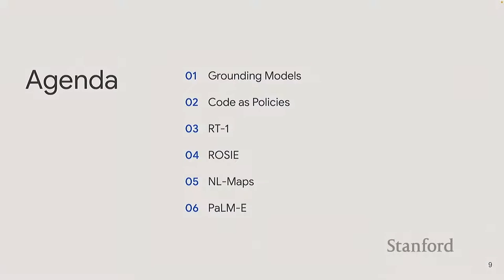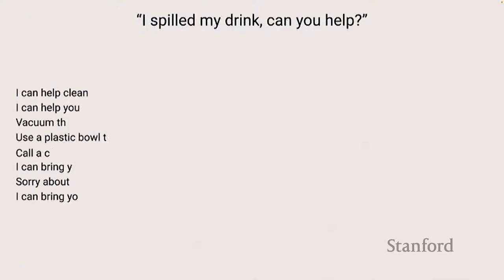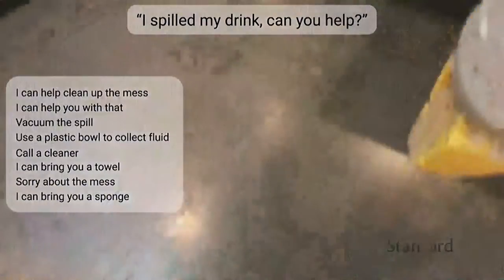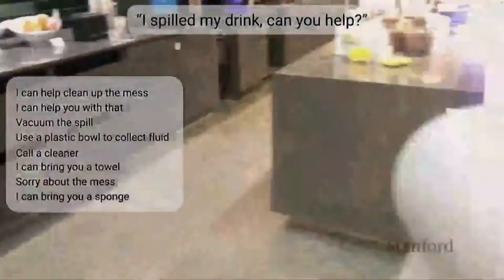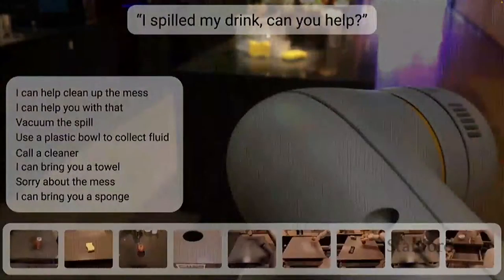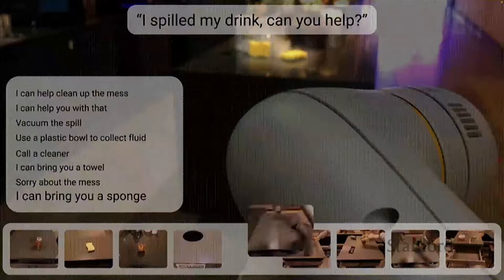I'm going to first talk about how we can ground these models in the world and their environment. Then I'll cover what powered that demo — code as policies. Then I'll talk about steps forward for using foundation models to give new knowledge to robotics. And finally, I'll talk about training our own foundation model. As I said, a language model can't see. So imagine you're a language model and you're trying to reason over the entire environment without being able to open your eyes.